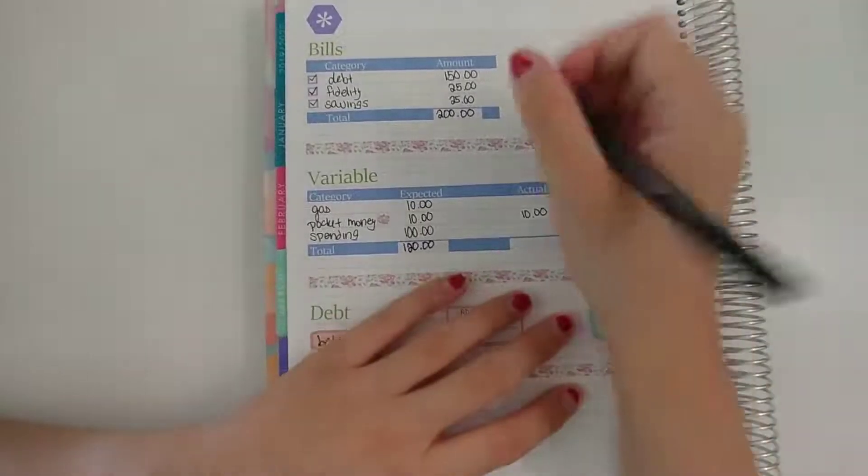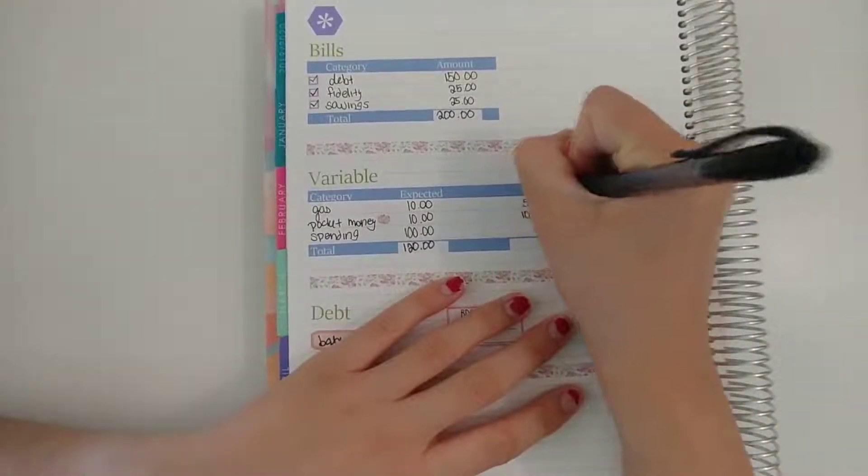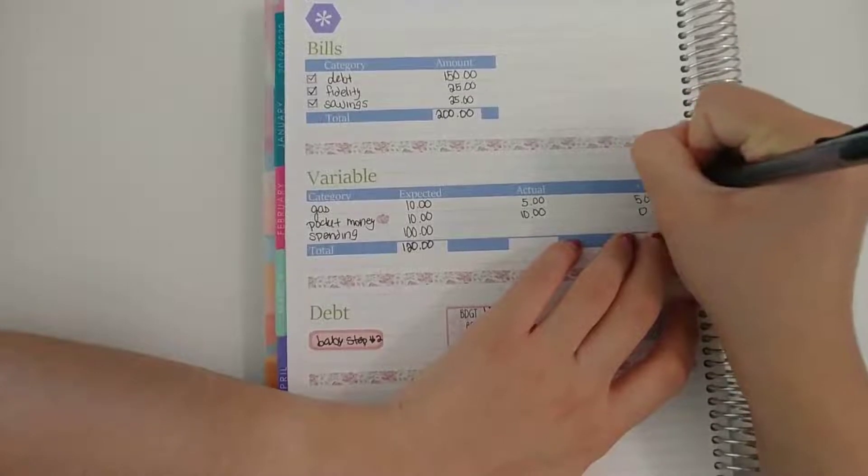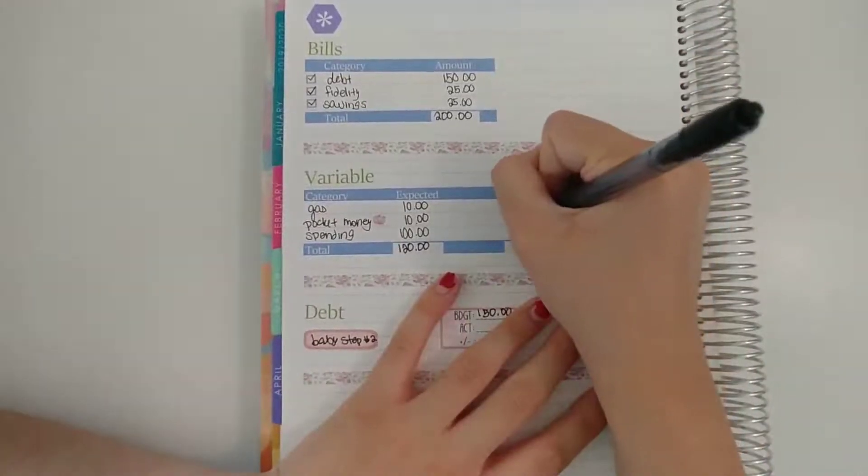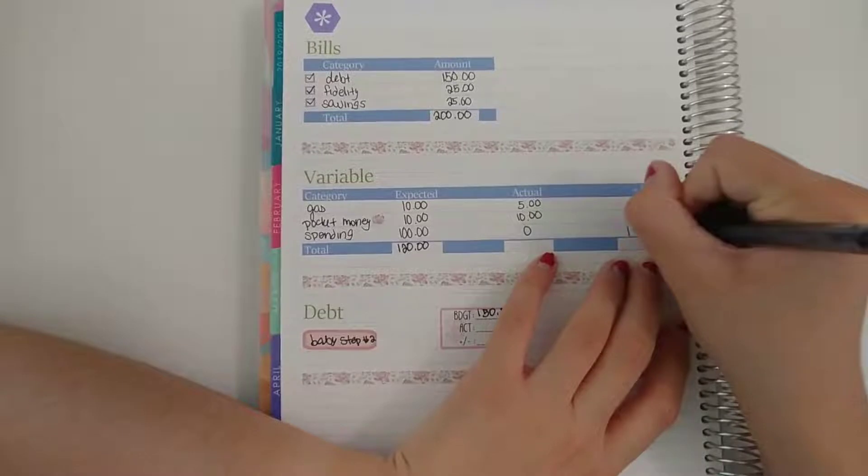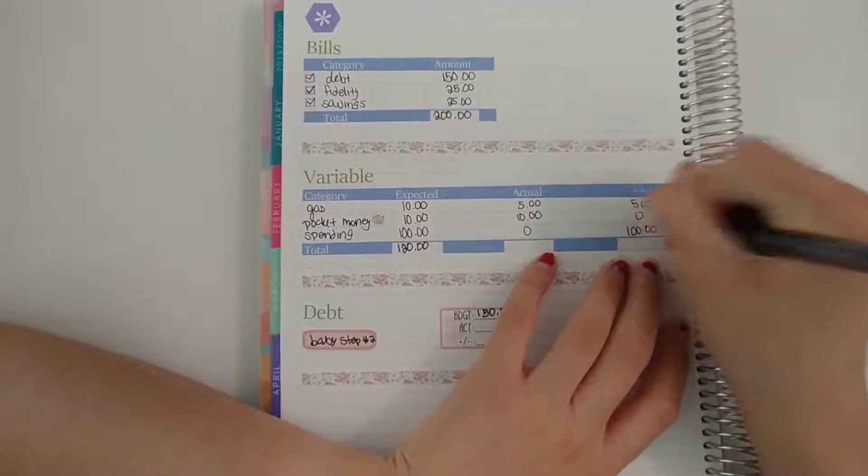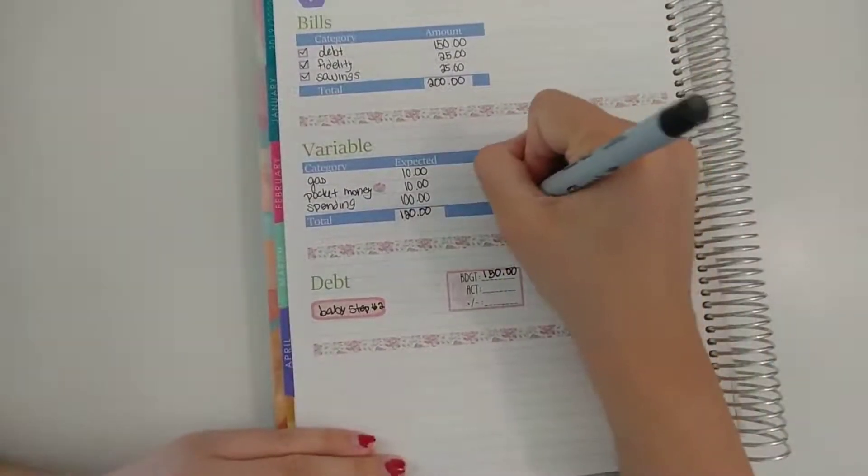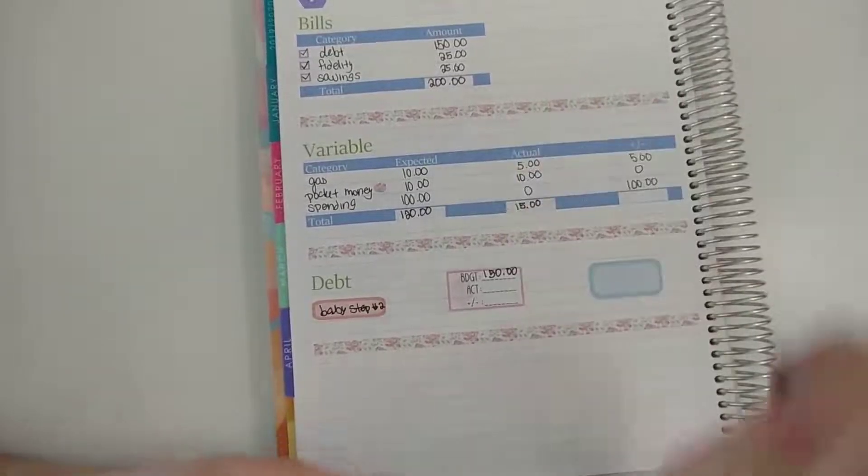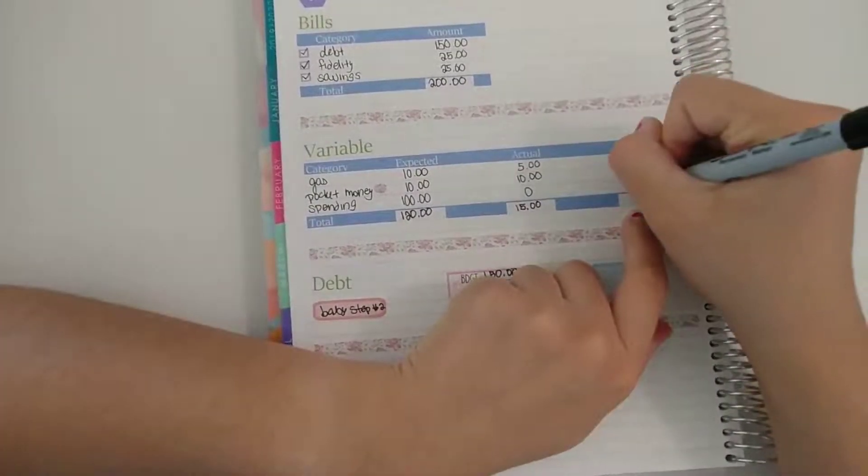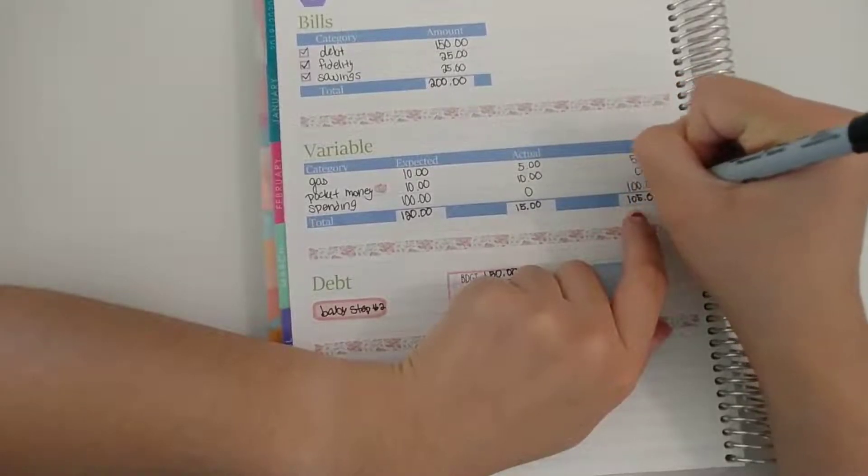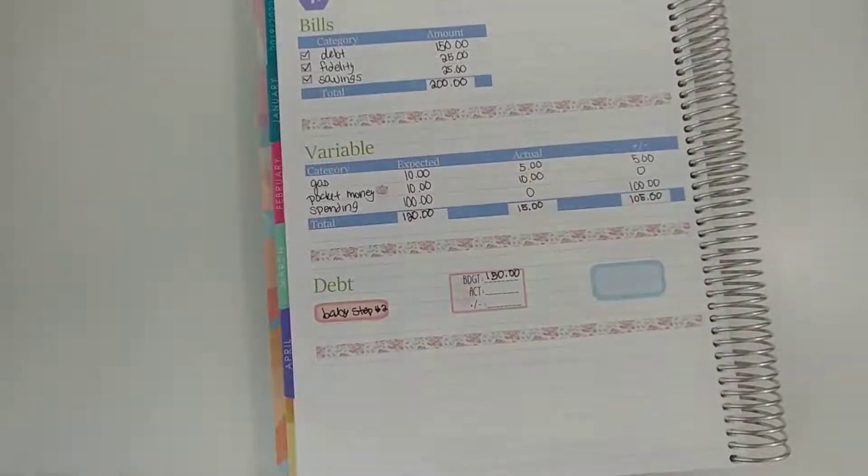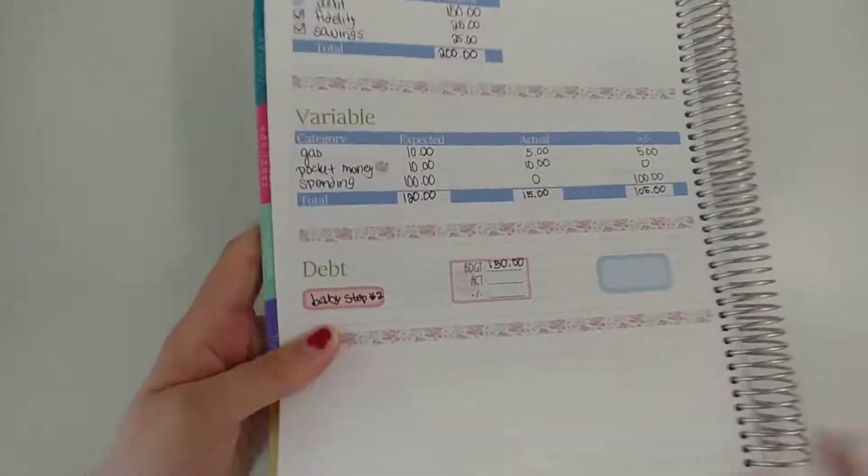And this debt snowball amount we will calculate at the end. So variable expenses. Gas was five dollars so I had five dollars remaining. And spending I actually spent zero for spending this month, which is really good. So for variable I actually spent fifteen dollars. That means I have a hundred and five dollars. So far I have an extra one hundred and five dollars.